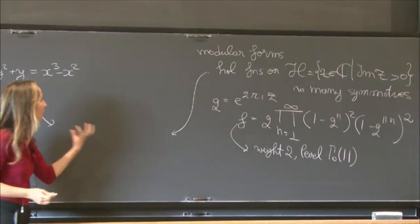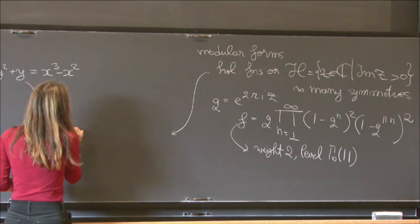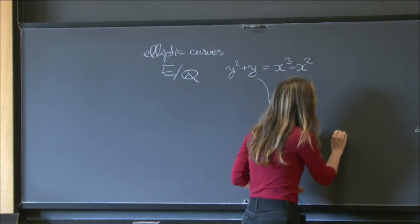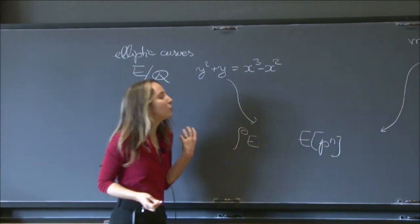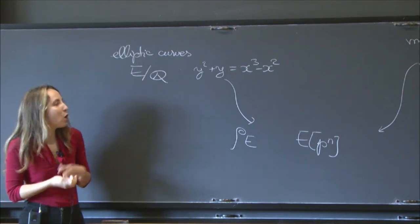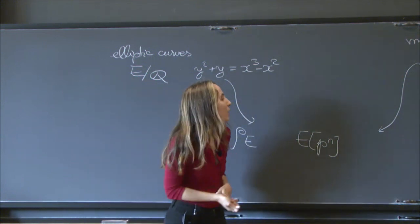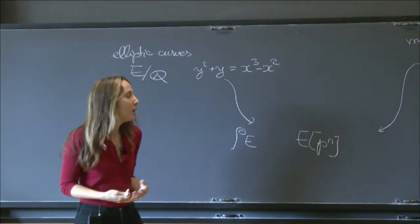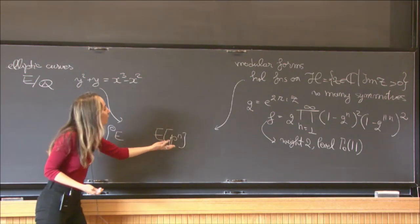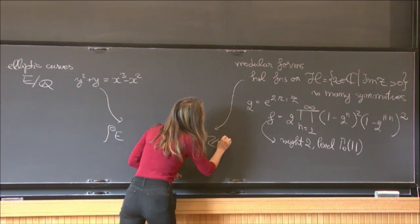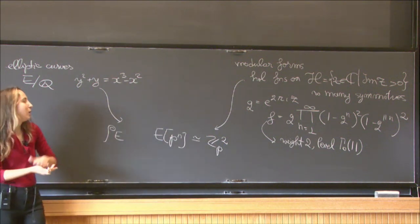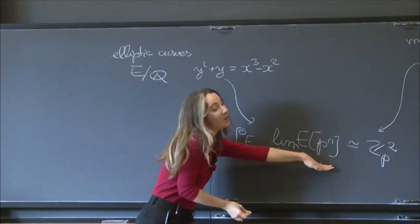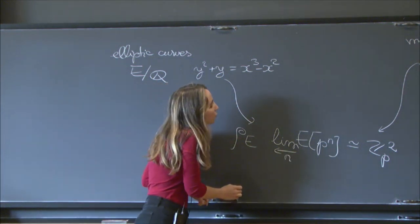There's a way to construct a Galois representation from the elliptic curve E. You can take the p^n torsion points on your elliptic curve. Thinking of the underlying complex curve, it's a Riemann surface — a torus — and the p^n torsion points are abstractly isomorphic to (Z/p^n Z)^2. Taking an inverse limit of these gives something like a rank-two module over the p-adic numbers.